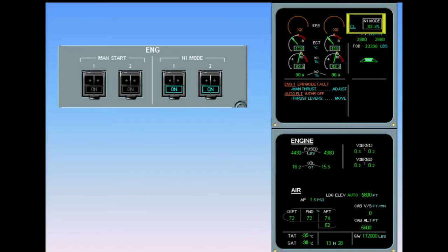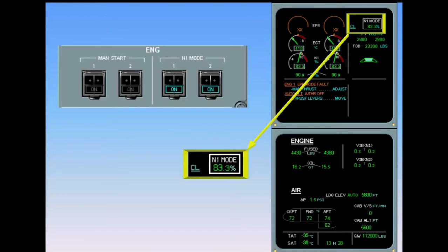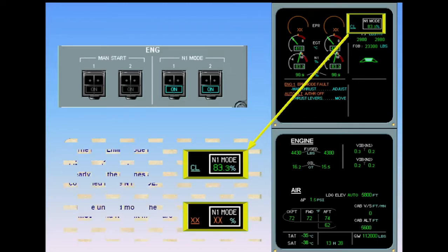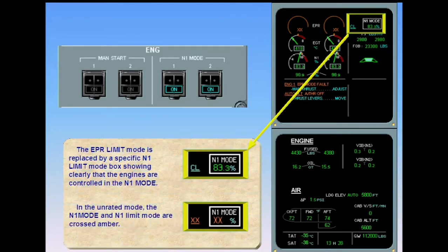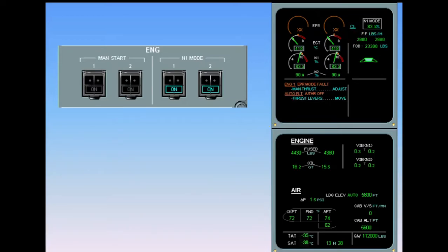The EEPER limit mode is replaced by a specific N1 limit mode box, showing clearly that the engines are controlled in the N1 mode. In the unrated mode, the N1 mode and N1 limit mode are crossed amber. The next action is to adjust the thrust — assume this has been done. ECAM complete, screens normal.